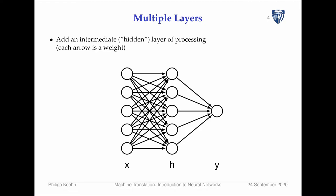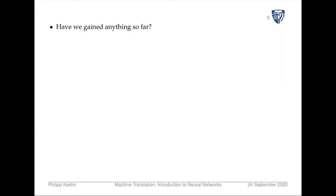One way to expand linear classifiers is to add an intermediate layer — hidden nodes — where each hidden node draws on all the inputs and combines them with a weighted sum. But have you gained anything by doing this? The answer is no, because you can still factor out this linear classifier into just a linear classifier and end up with the same result. So adding layers alone doesn't help.